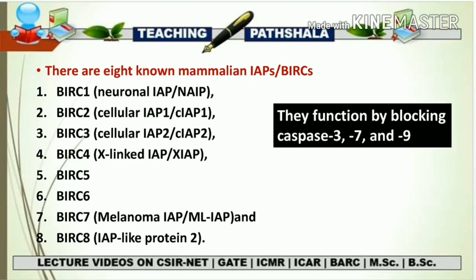You don't need to remember all these IAPs from an exam standpoint, but sometimes you may encounter one of these terms in Part C, so you should at least be familiar with them. The 8 mammalian IAPs are: BIRC1 which is the neuronal IAP, BIRC2 and BIRC3 which are cellular IAPs, BIRC4 which is X-linked IAP, BIRC5, BIRC6, and BIRC7 which belong to the melanoma IAPs, and BIRC8 which is IAP-like protein 2. Remember the functionality of IAPs, what conserved domain they have — the BIR domain — and how they play their role during apoptosis.